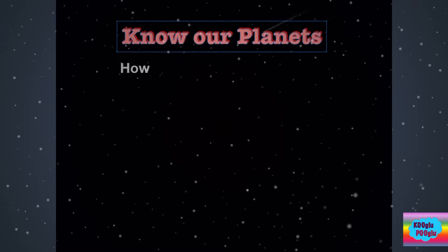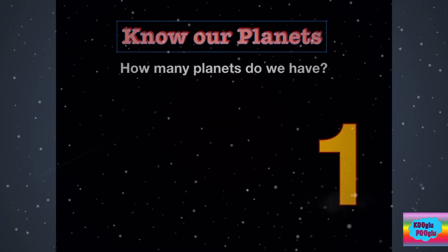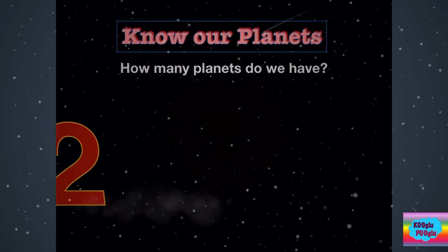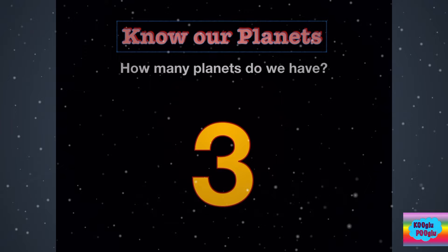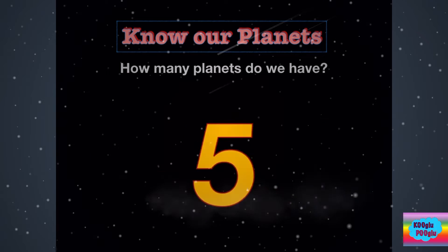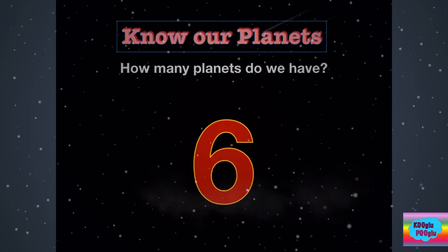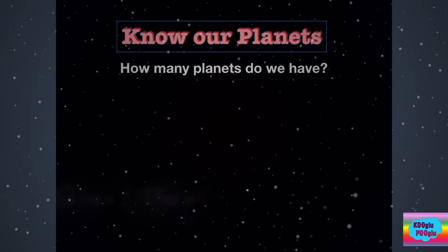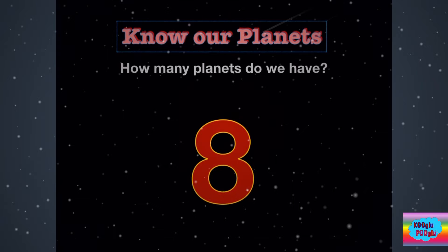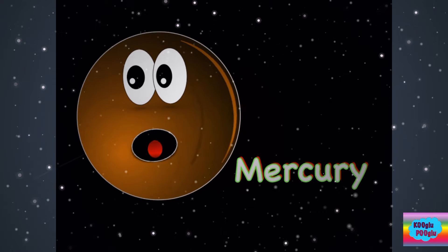Let's know our planets. How many planets do we have? Let's count: one, two, three, four, five, six, seven, eight. Now that means we have eight planets. Let's learn them by their name one by one. Mercury.